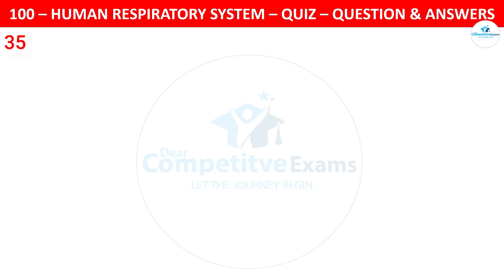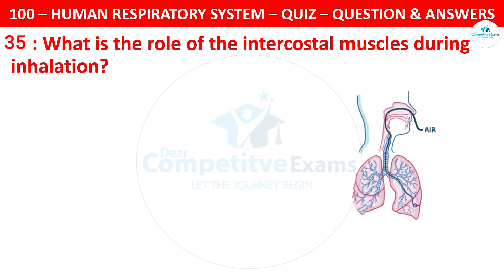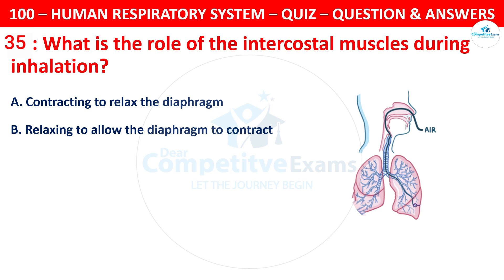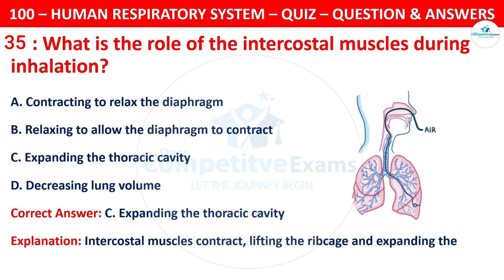Question 35: What is the role of the intercostal muscles during inhalation? Your options are: contracting to relax the diaphragm, relaxing to allow the diaphragm to contract, expanding the thoracic cavity, or decreasing lung volume. The correct answer is C — expanding the thoracic cavity. The intercostal muscles contract, lifting the ribcage and expanding the thoracic cavity during inhalation.